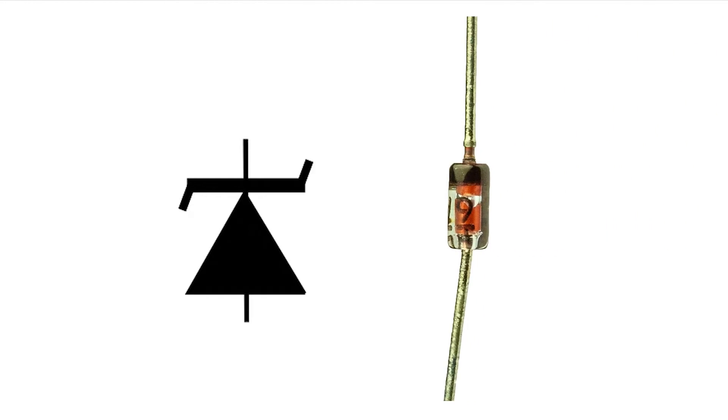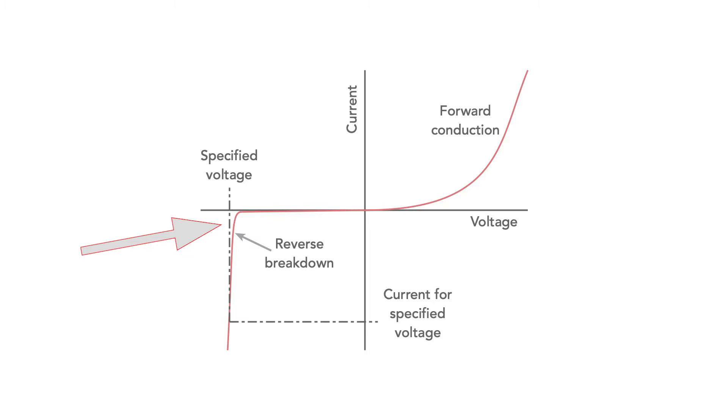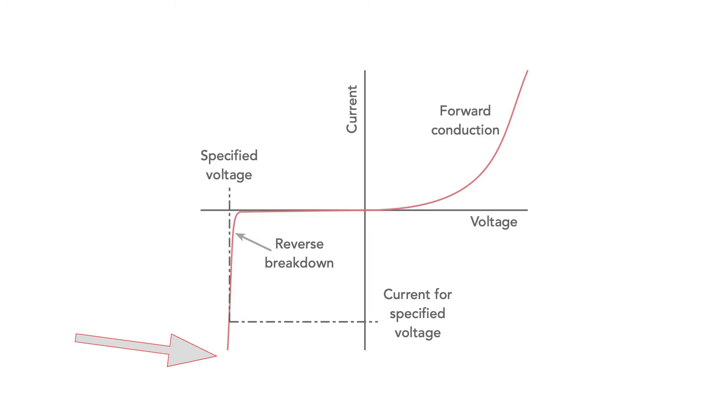I'll also explain how it can be used with various other components to extend its functionality for its output levels and the like. The basic Zener diode or voltage reference diode uses its reverse breakdown characteristic. It performs like almost any other PN junction diode in its forward direction, but in the reverse direction it breaks down and gives quite a stable voltage regardless of the current drawn.